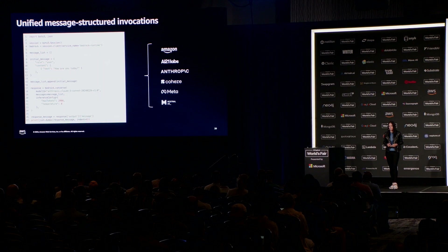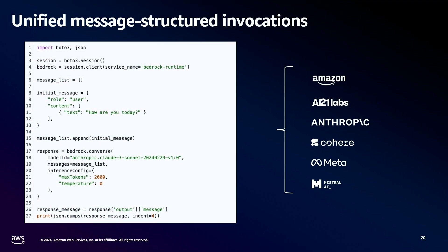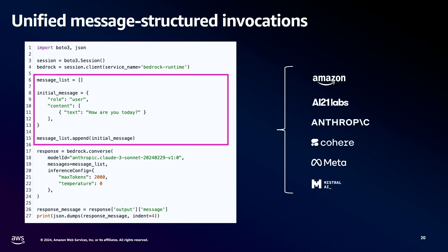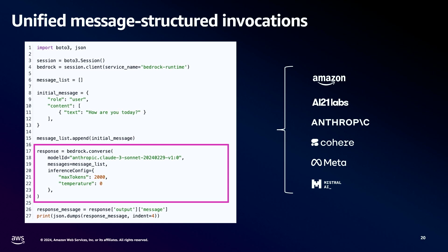Here's a Python example showing how to use the new Converse API. You start by integrating the Python SDK client, define a list of messages where you put in your user message prompts and system prompts, then pass that message list in a single API call using the Converse API. In the model ID field, you choose which model to test — here using an Anthropic model — and pass the messages and inference parameters. All those parameters are standardized, and we handle the conversion to the specific format that the model expects.